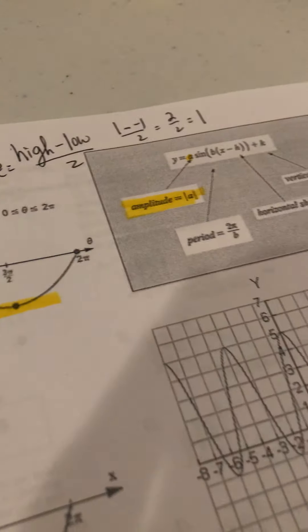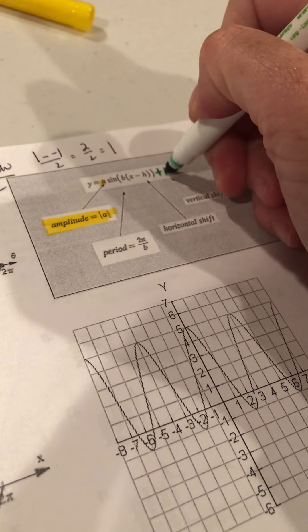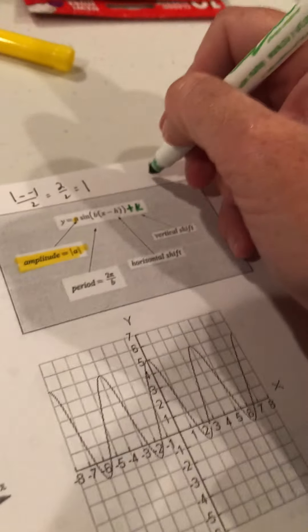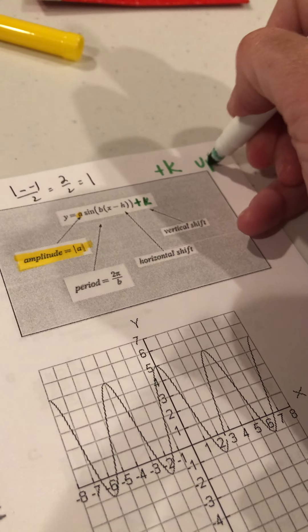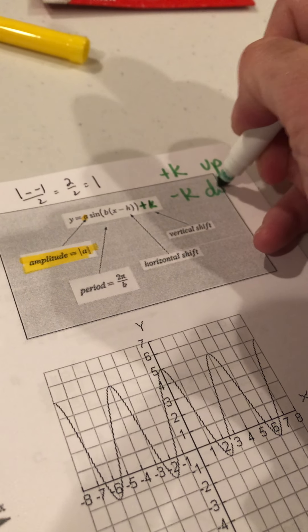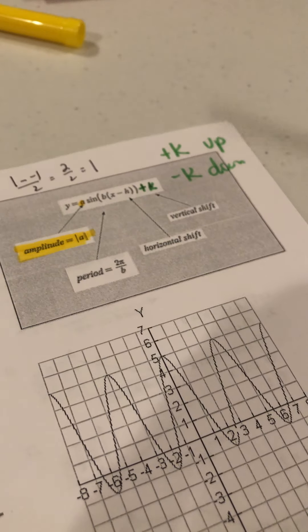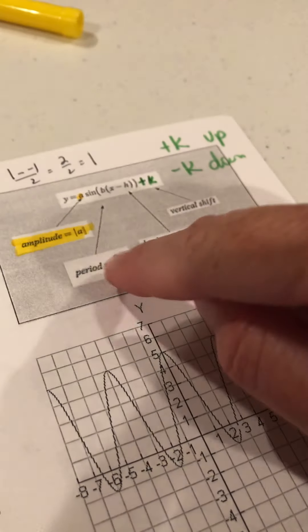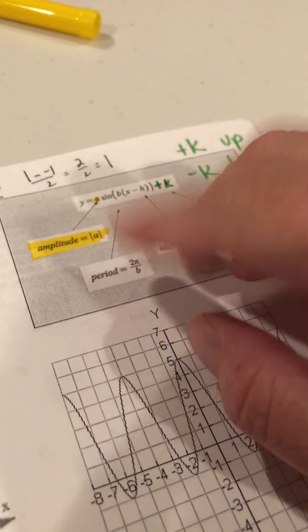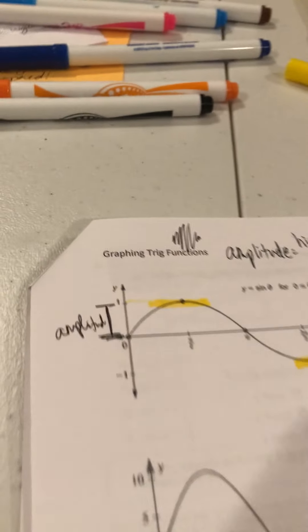You need to know at least the vertical shift. If it says plus k at the end, we go up; if it says minus k, we go down. The period is 2π over b — we'll talk about that in a minute.